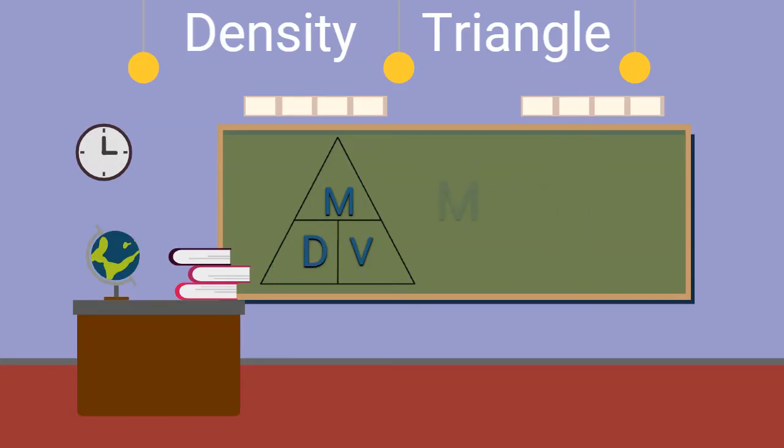If we need to find the mass, we cover the M, and what is left is D times V, or density times volume.